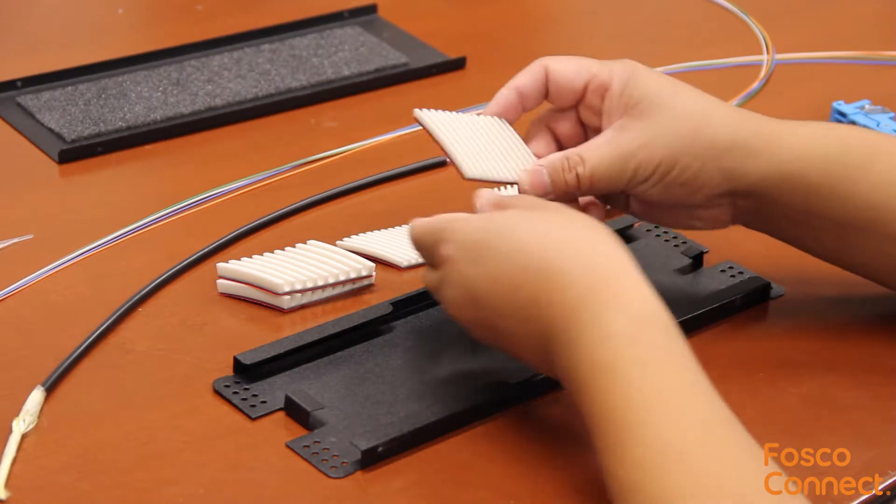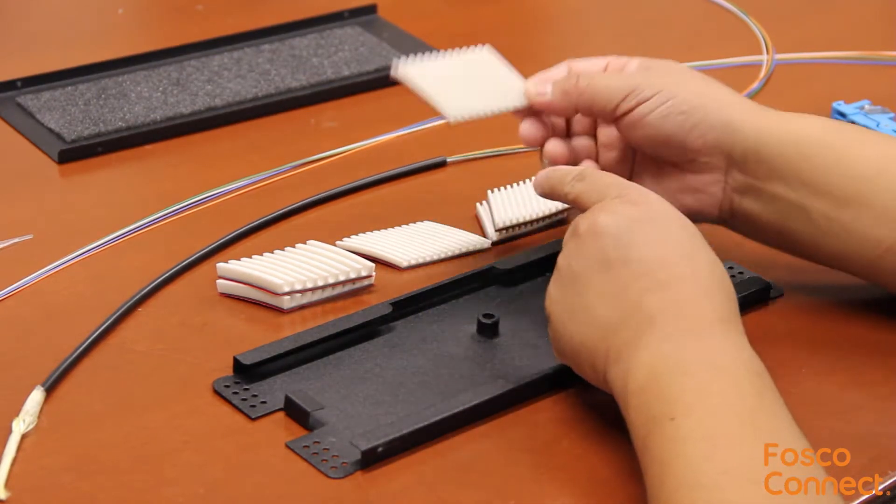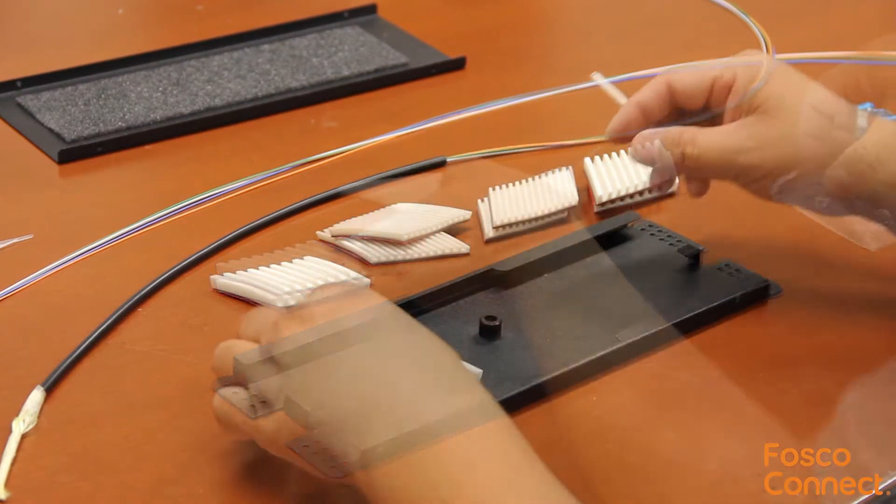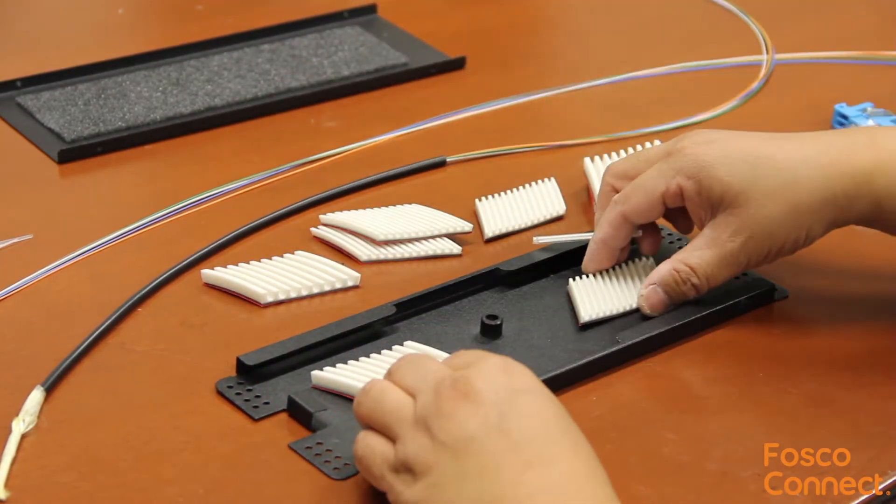It has 8 pieces of different size and angle fiber splice sleeve holders for holding fusion splice sleeves or mechanical splice sleeves. Some sleeve holders are left angled and some are right angled.